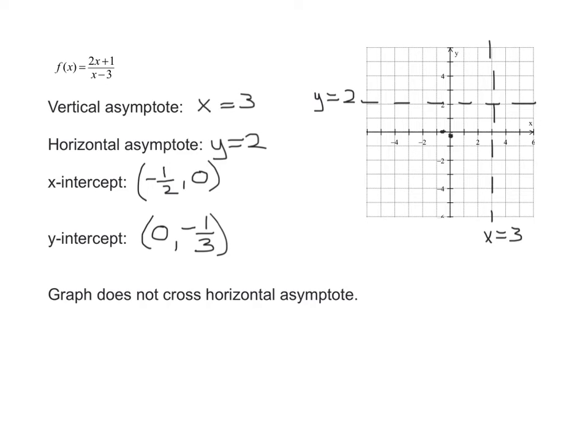It approaches the horizontal asymptote out at negative infinity, doesn't cross it, comes down through those two points, and then approaches your vertical asymptote, and again, doesn't cross it. So I'm very happy with what happens to the left of this vertical asymptote.